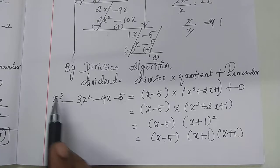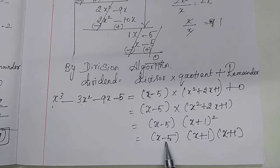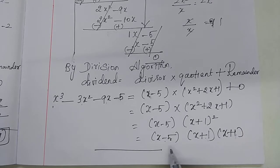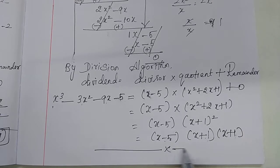Here degree is 3. Therefore, we get three factors. Division number 2 is also over.